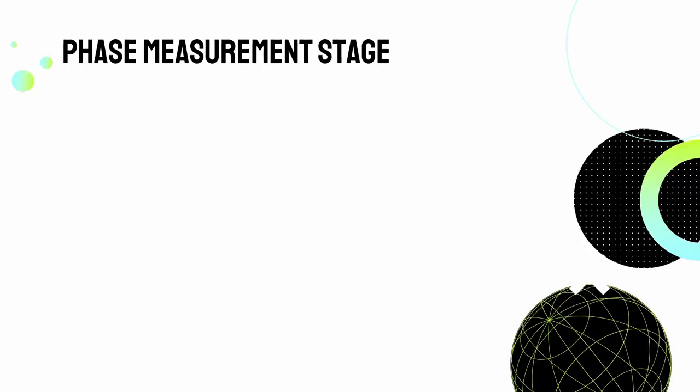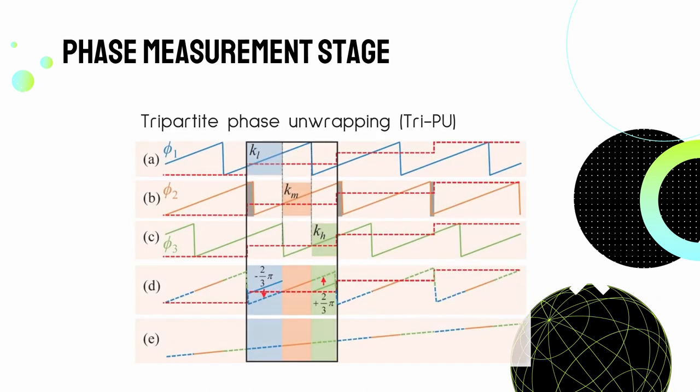Next, in the phase measurement stage, a more concise and efficient method was proposed by gaining insights from a tripartite phase unwrapping method or TriPU method. As this method removes jump error, it makes use of three wrapped phases, with a phase difference of 2π over 3 as shown in figure A, B, and C.